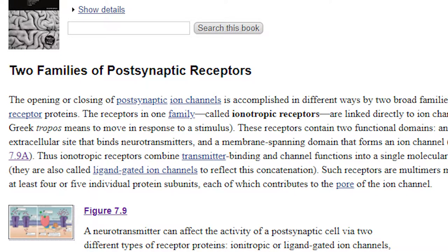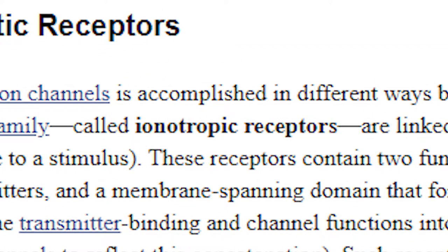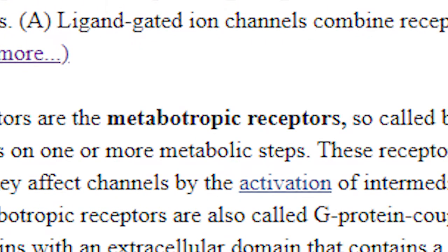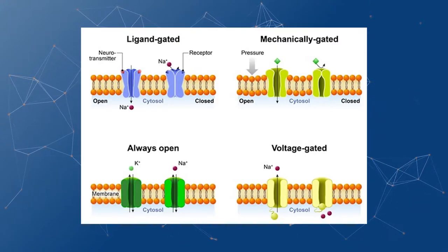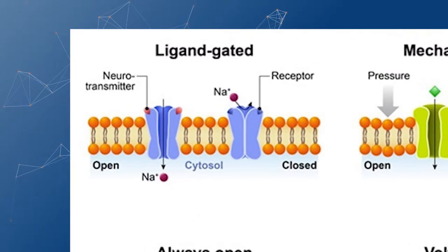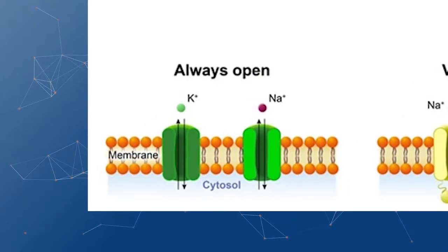There are two groups of receptors. One is an ion channel and opens when directly activated, and the other releases some intermediate protein inside the cell, which will cause a cascading effect that will open the ion channel. There are four kinds of ion channels: ligand-gated, mechanically gated, always open, and voltage-gated.